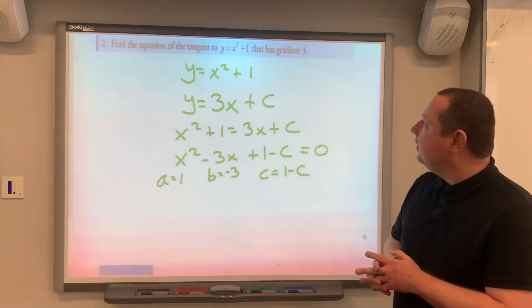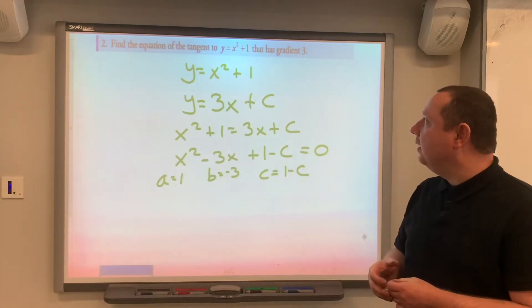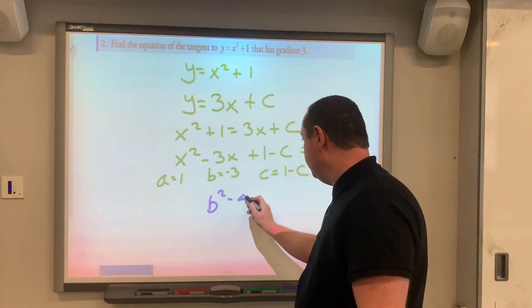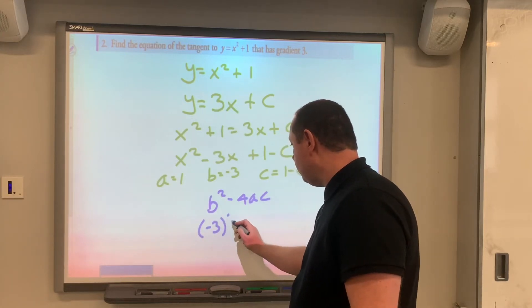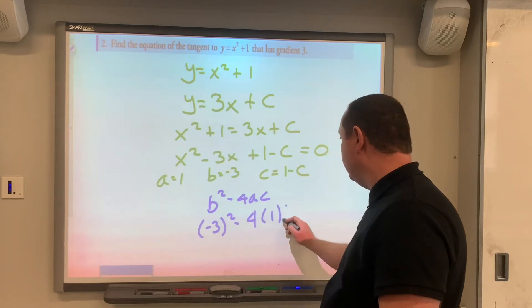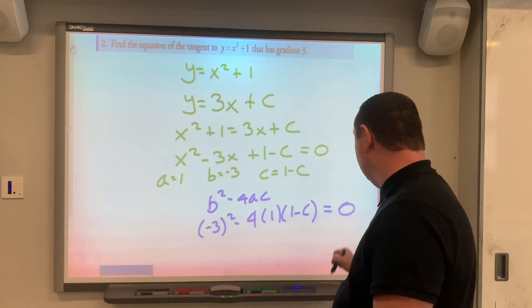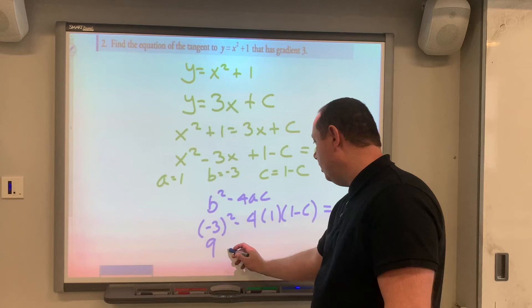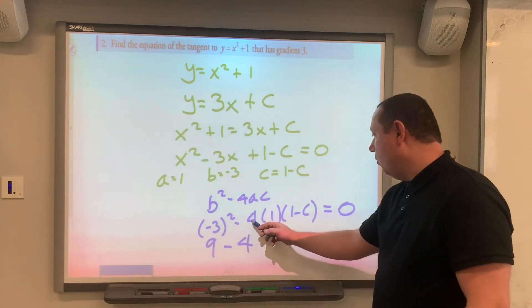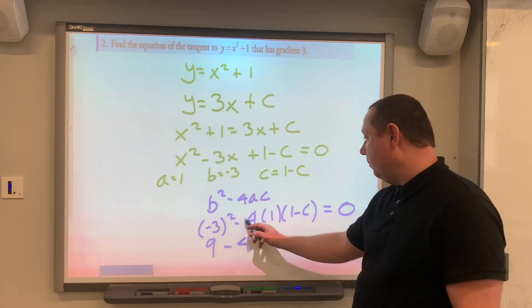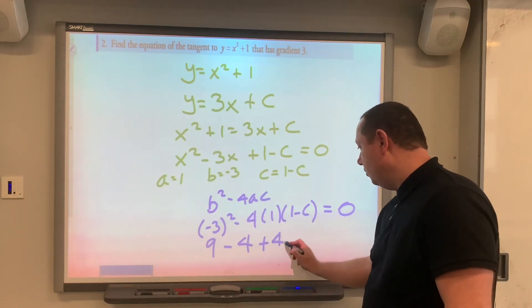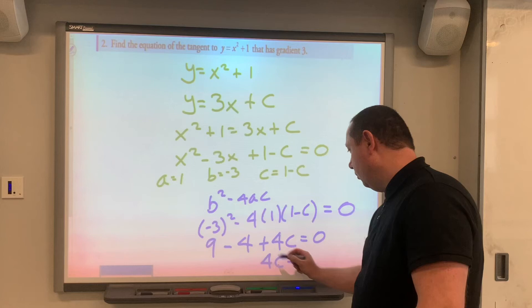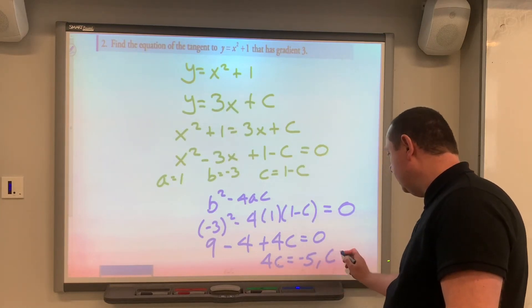So we need to use b squared minus 4ac and make that equal to zero since it's a tangent. So b squared minus 4ac, we've got minus 3 squared minus 4 times 1 times (1 minus c), and we know what this equals zero. So that's 9, 4 times 1 is 4 times the number 1 is still 4, minus 4, 4 times c is 4c, minus times a minus is a plus, plus 4c equals 0. So 4c equals the number 9 minus 4 is 5, so minus 5. C is minus 5 over 4.